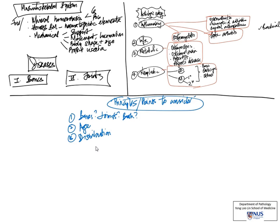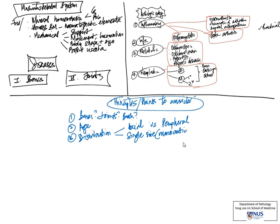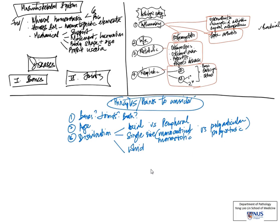The third point is the distribution of pathology, whether it's bones or joints. Is it involving the axial skeleton — such as the spine, pelvis, or skull — or is it involving the peripheral skeleton? Another distribution parameter is whether it's a single site: monoarticular meaning one joint space, or monoosteotic meaning one bone, versus polyarticular or polyosteotic involving many joint spaces or many bones. This helps a lot to tease out the differential diagnosis.